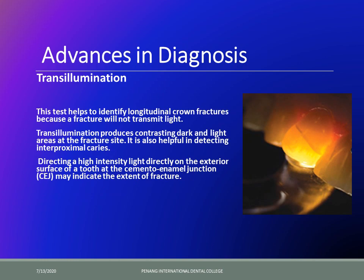Coming to the advances in the field of diagnosis — transillumination has been covered in year four as well. This test helps to identify crown fractures because when you shine a very bright light through the tooth, the fracture line will not be able to transmit this light, so you will see contrasting dark and light areas at the fracture site, as is very evidently clear in the picture on the right. It can also be helpful in detecting interproximal caries. All you have to do is direct a high-intensity light directly on the surface of the tooth, preferably at the level of the CEJ, so you can gain visibility for the entire tooth surface.